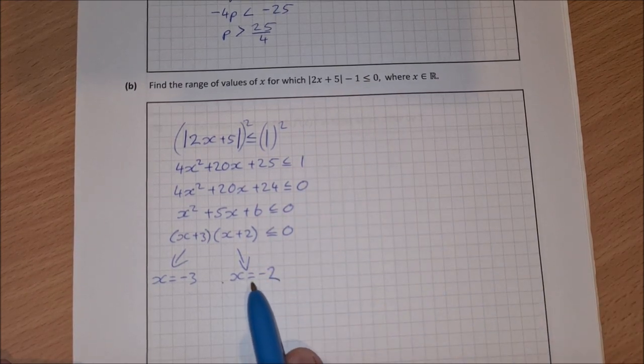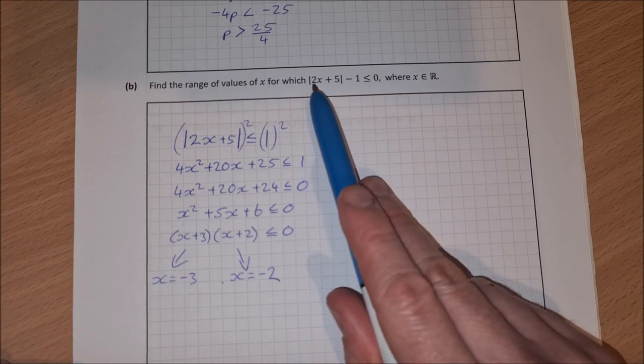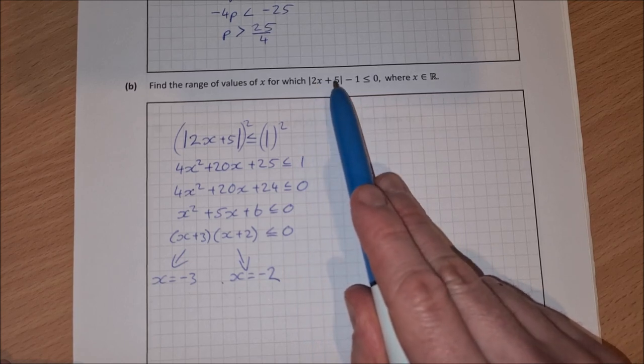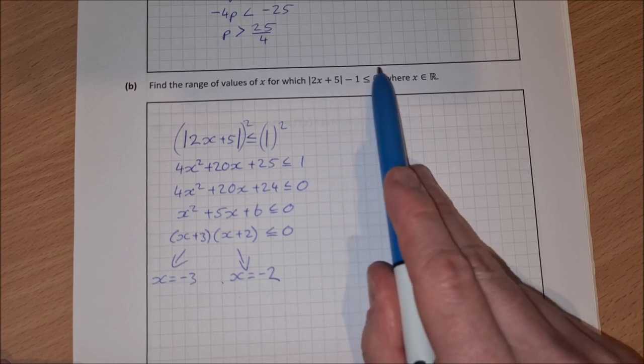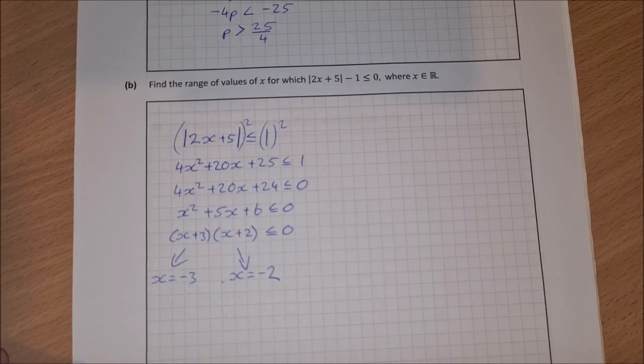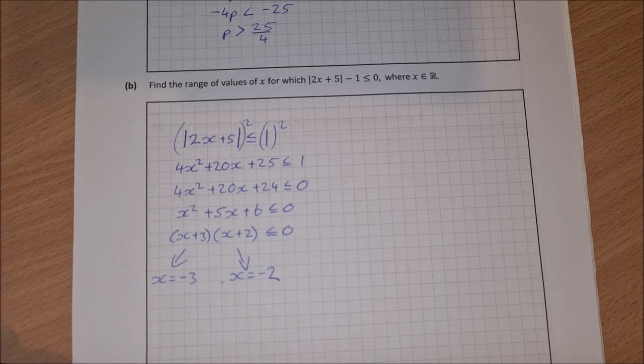And the other one, x is equal to minus 2. 2 times minus 2 is minus 4. Plus 5 is plus 1. Absolute value of plus 1 is 1, 1 minus 1 is less than or equal to 0. So both values hold true in this case.